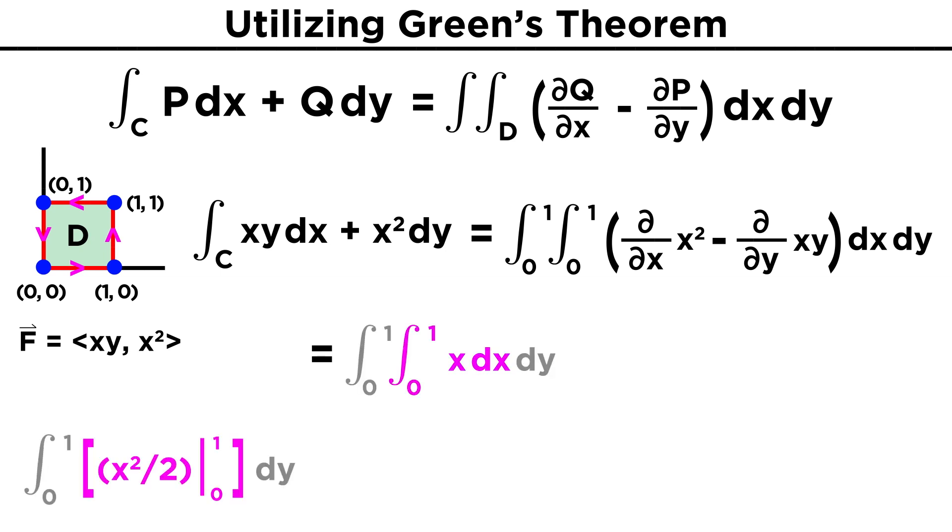Integrating x first, we get x²/2 evaluated from zero to one, which gives 1²/2 minus zero, or just one half. We still have the y integral to evaluate, but there's no y dependence left, we just have a constant, so integrating 1/2 dy gives y/2 evaluated from zero to one, which just gives one half minus zero, or one half. This is the value of our line integral.